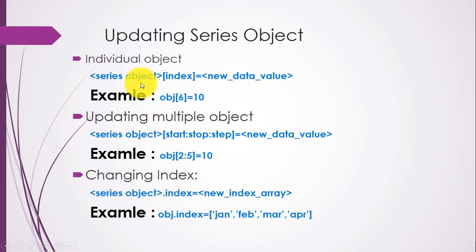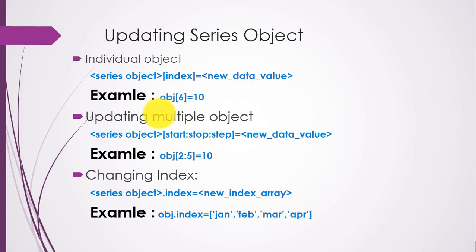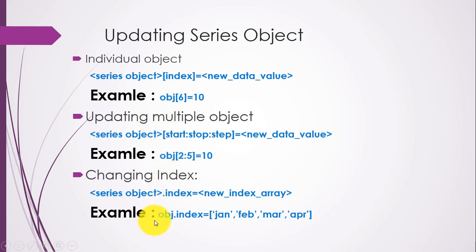So without much delay, let's start. To update, we can update an individual element by specifying the index value. The syntax is: series_object[index] = new_value, just like any NumPy array or list element. You can see the example where I have modified the element at index 6 to 10.